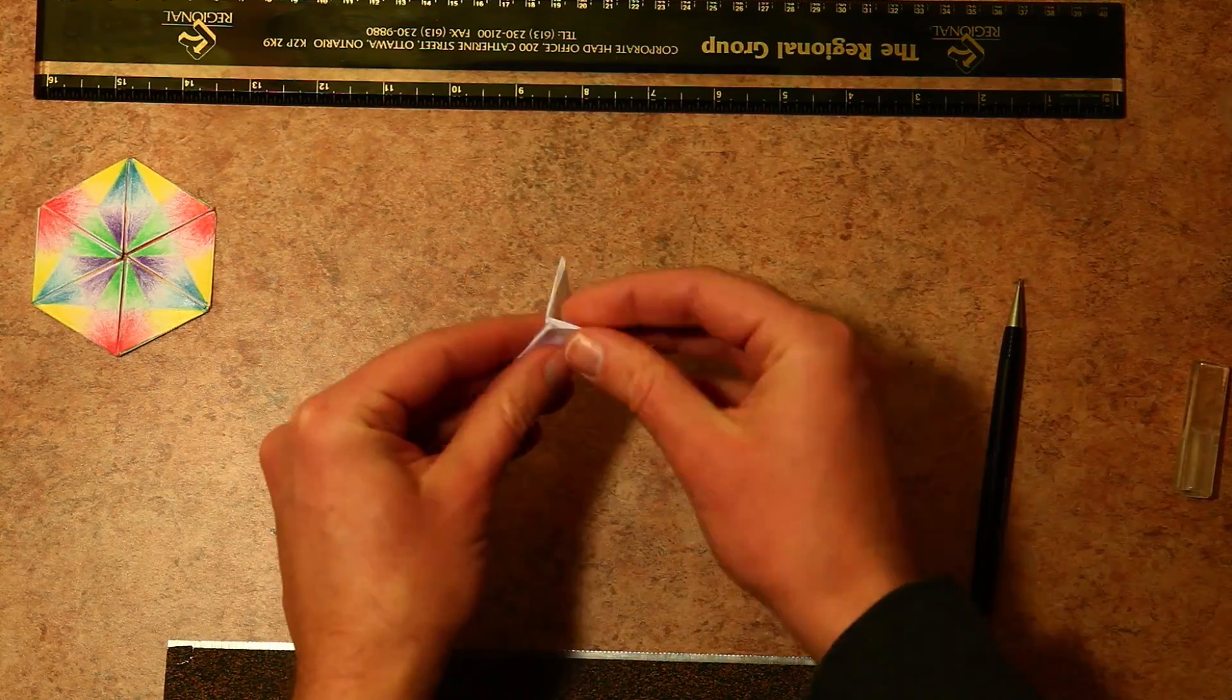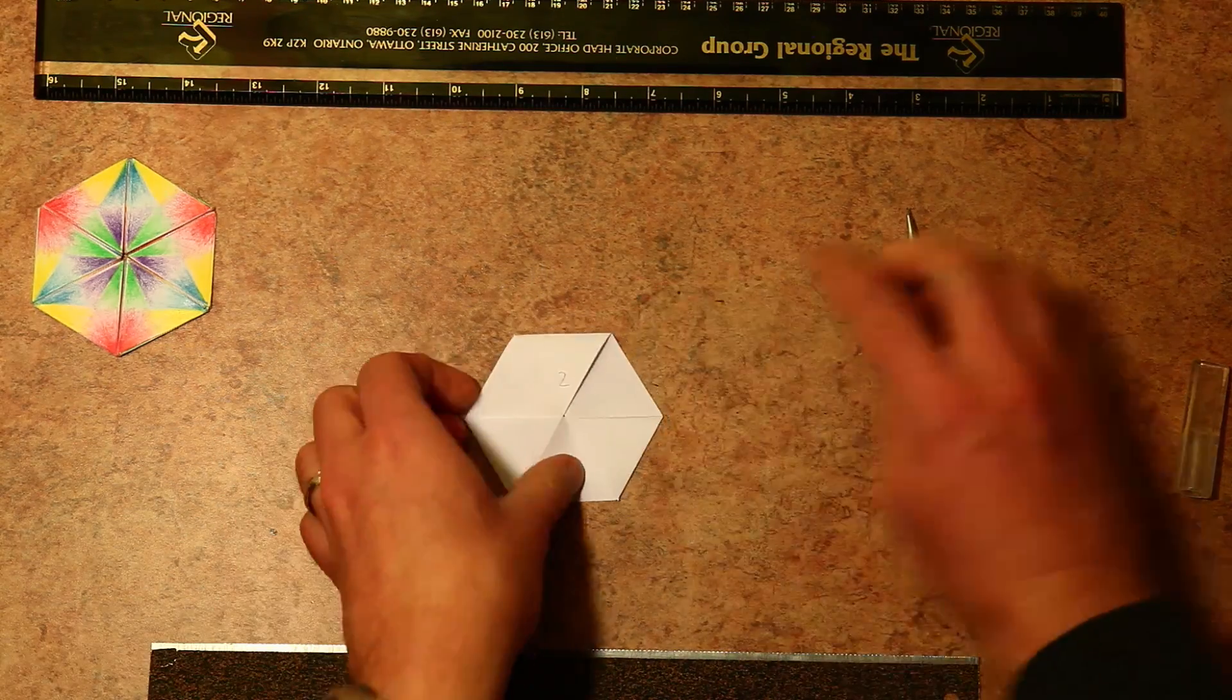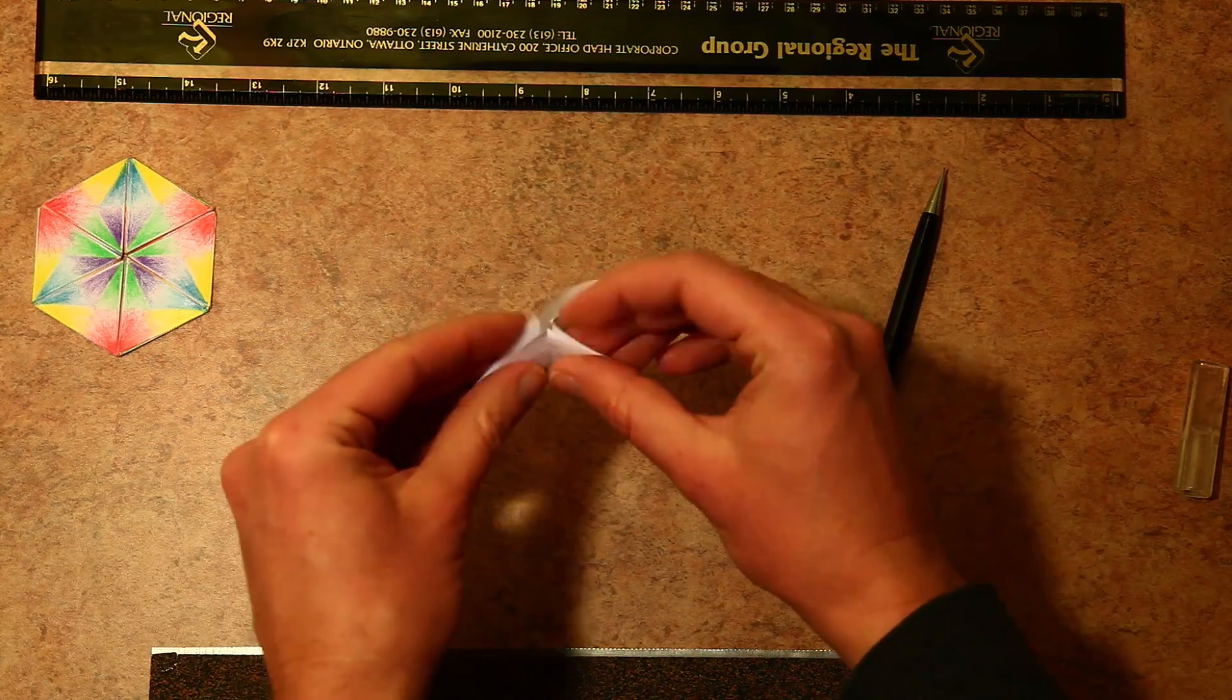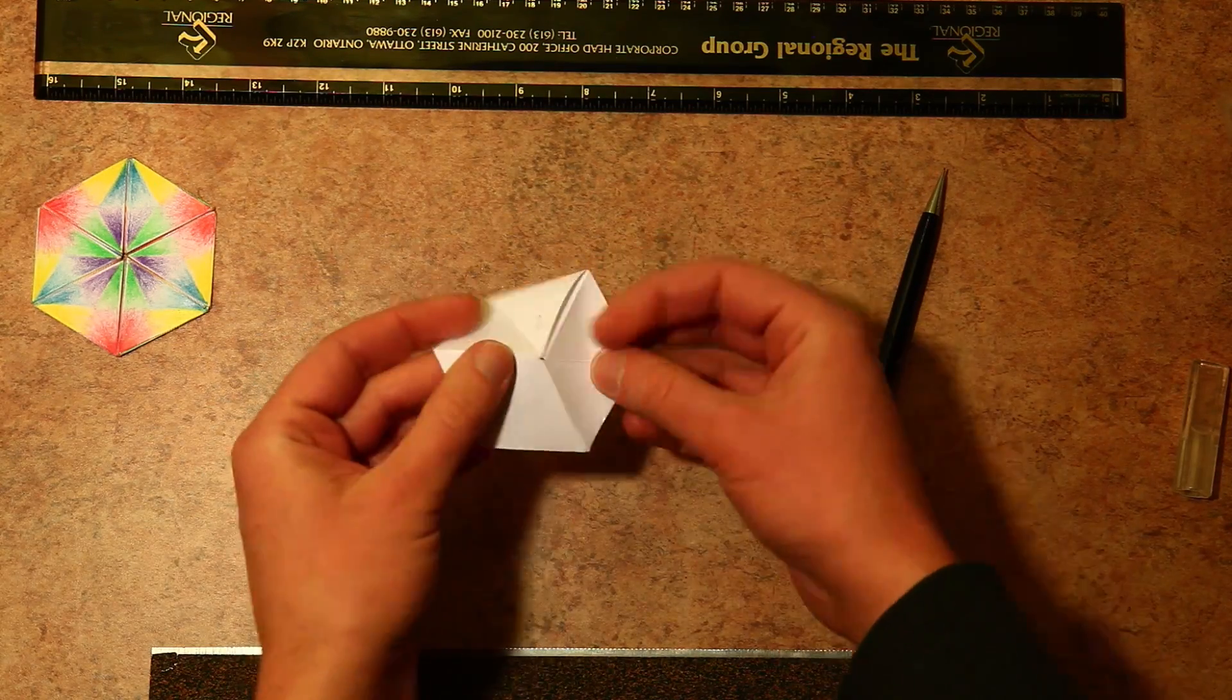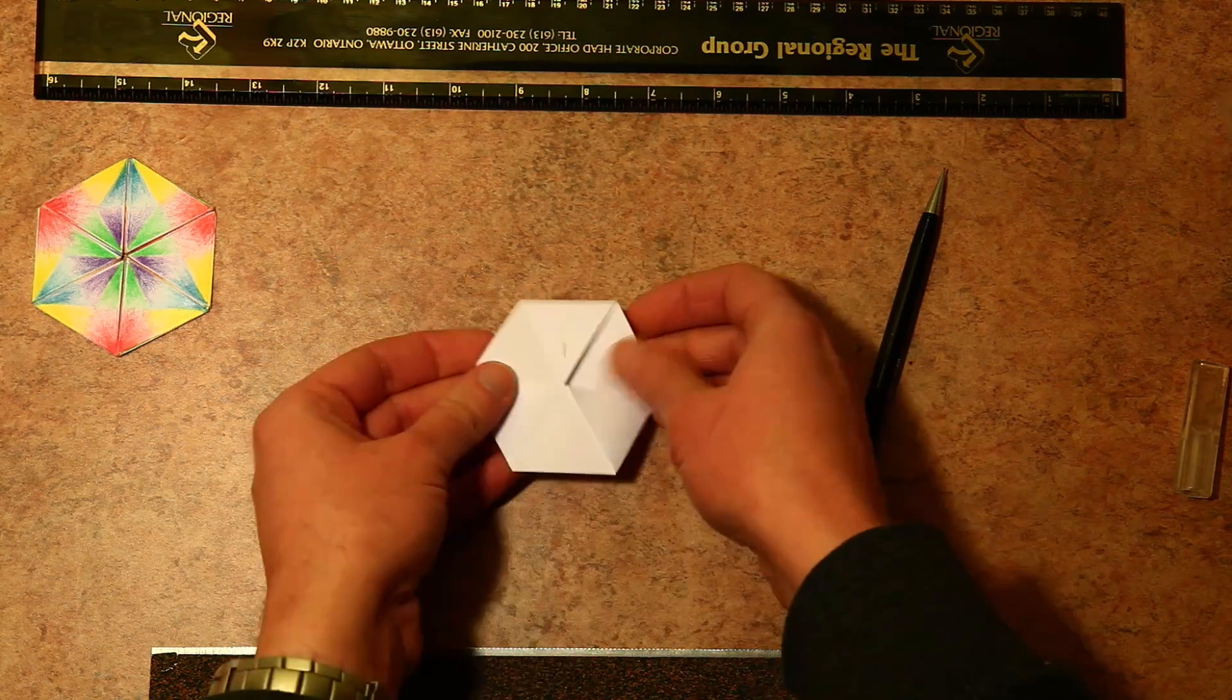Then you can label the trihexaflexagon. It has three sides. So you've got one, two, and three. That's it. This is important because we're going to need to know how to do this for the next step.